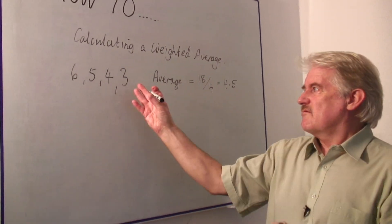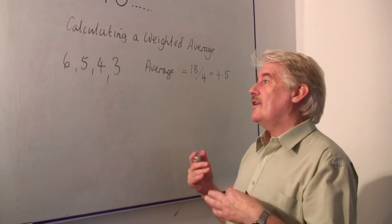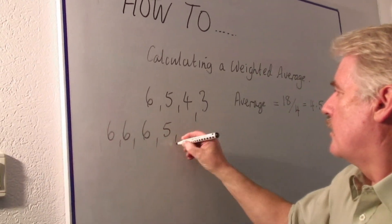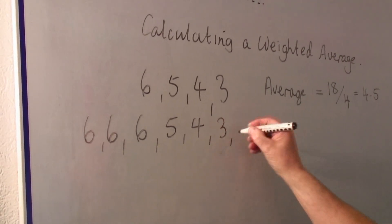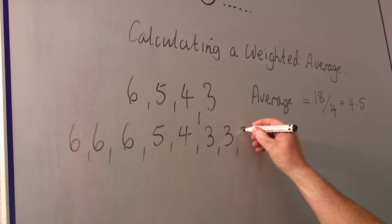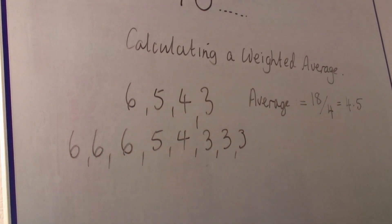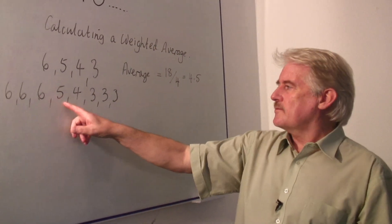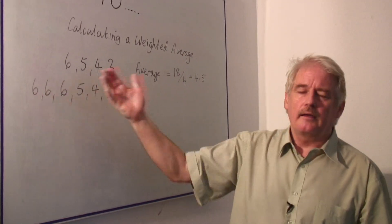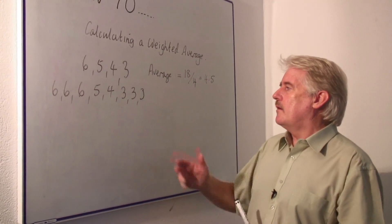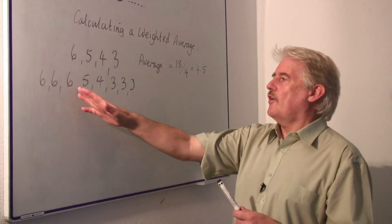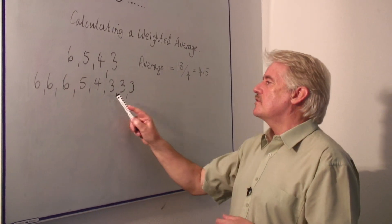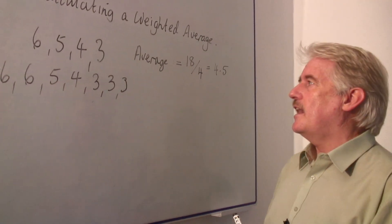But what this doesn't say is what happens when you have, for example, not one of these numbers but maybe more than one of the numbers. So let's say you've got a list of numbers of this kind. Now obviously I can't say six plus five plus four plus three and divided by the overall number. The weighted average, although the numbers six, five and four and three are the only numbers in the sequence, six is more important and three is more important in this case. So we have to make allowances.